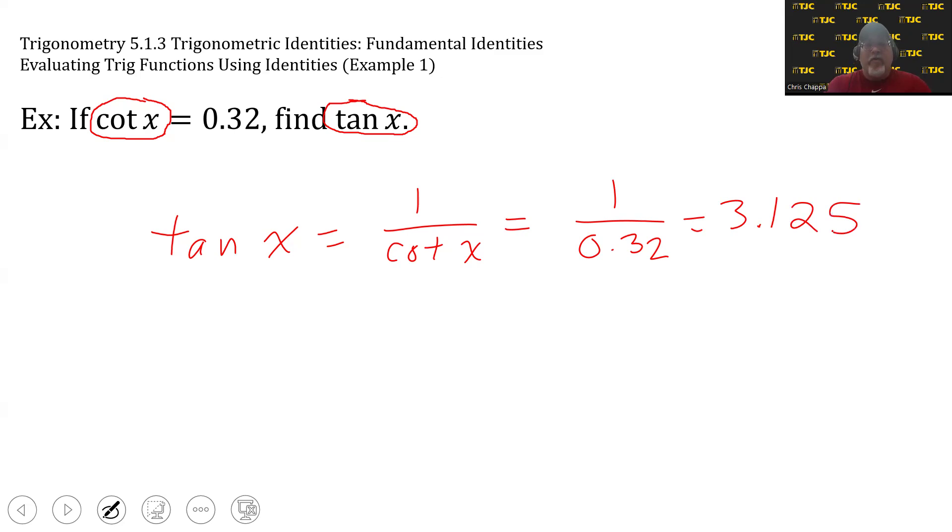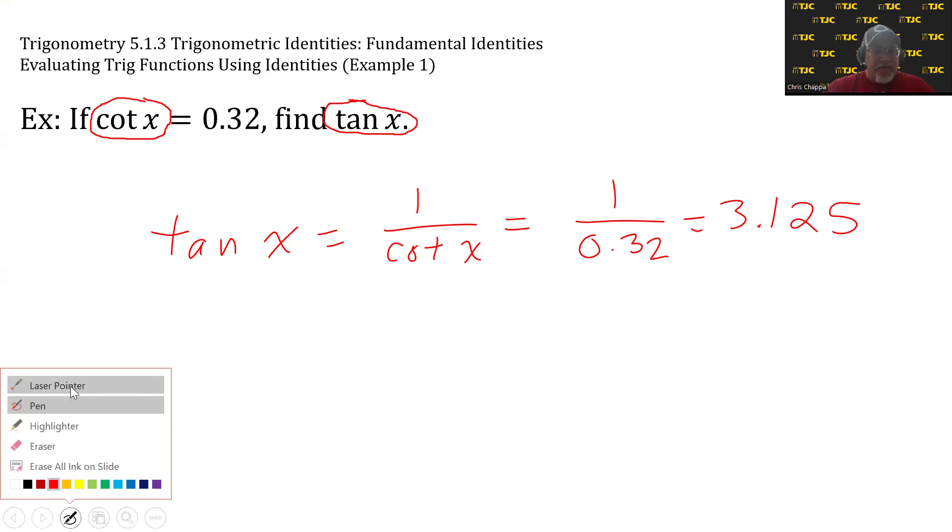So, this one was pretty straightforward because the relationship between the trig function whose value we were given, cotangent, and the trig function whose value we were not given, tangent, was pretty straightforward. It was a reciprocal relationship.